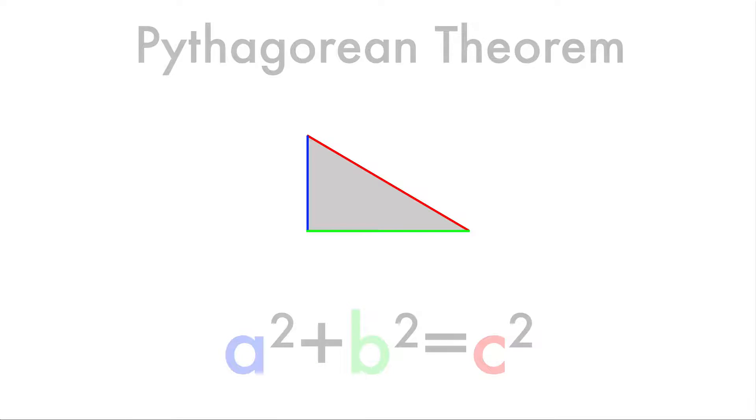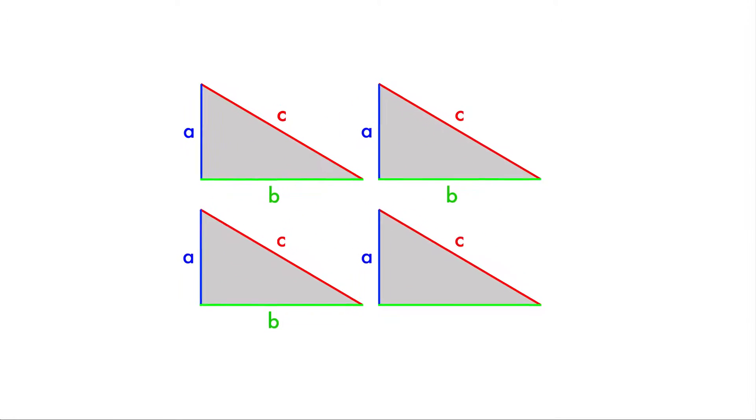So let's just start out with the right triangle with sides a, b, and c, just like you'd think. So the trick we're going to do, and the trick Pythagoras did, is we're going to make four copies of this triangle.